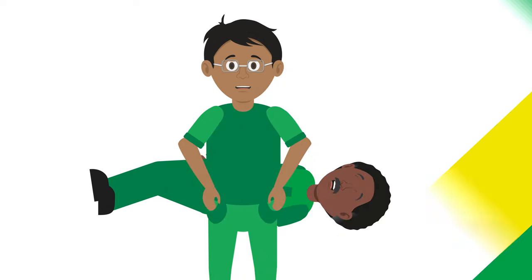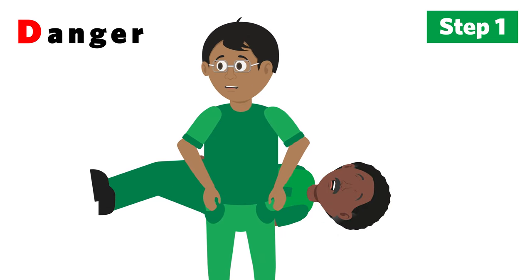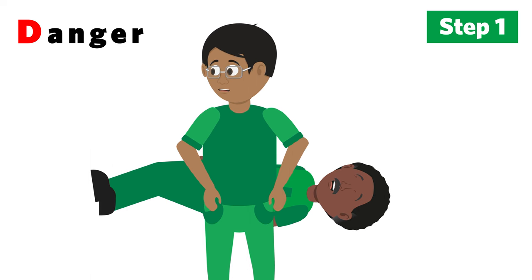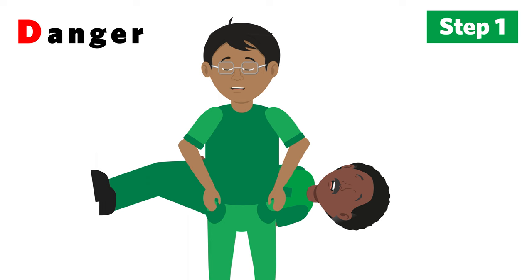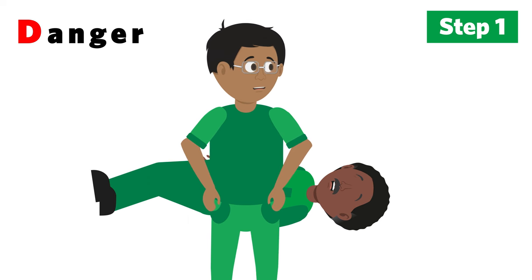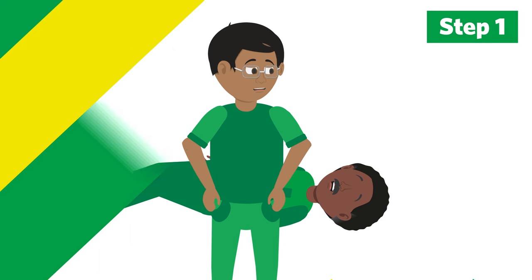D is check for danger. Always make sure the area is safe and there are no hazards around that could cause injury to you or the casualty. Only approach if it is safe to do so. If you cannot make the area safe, call for help and wait until emergency services arrive to make the area safe.